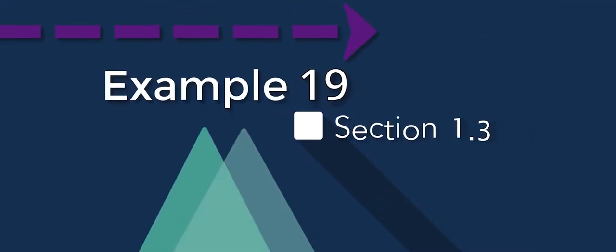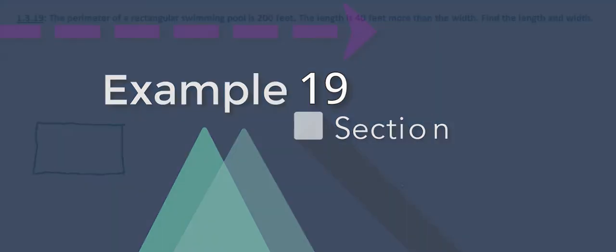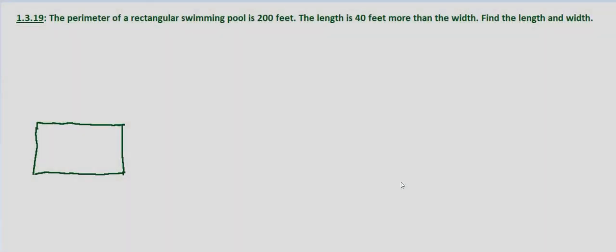Continuing to work with formulas, in this question we're asked to find the length and width of a rectangular swimming pool given that the perimeter is 200 feet and the length is 40 feet more than the width.